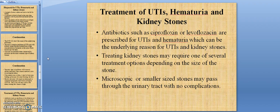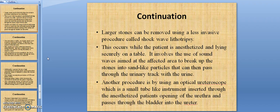Treatment of UTIs, hematuria, and kidney stones. Antibiotics such as ciprofloxacin or levofloxacin are prescribed for UTIs and hematuria, which can be the underlying reasons for UTIs and kidney stones. Treating kidney stones may require one of several treatment options depending on the size of the stone. Microscopic or smaller-sized stones may pass through the urinary tract without complication. Larger stones can be removed using a less invasive procedure called extracorporeal shock wave lithotripsy. This occurs when the patient is anesthetized and lying securely on a table. It involves the use of sound waves aimed at the affected area to break up the stones into sand-like particles that can pass through the urinary tract with the urine.